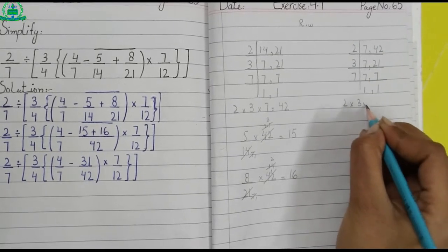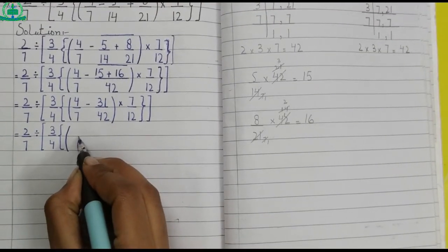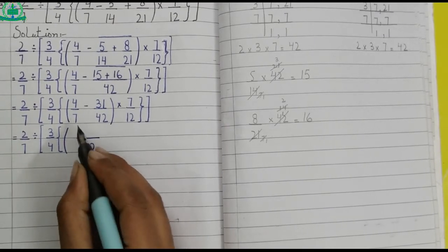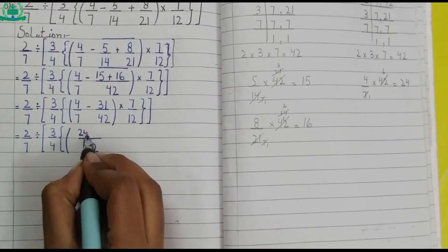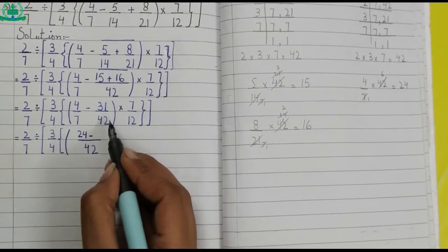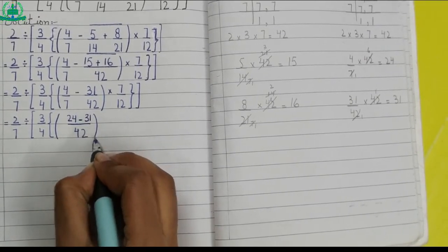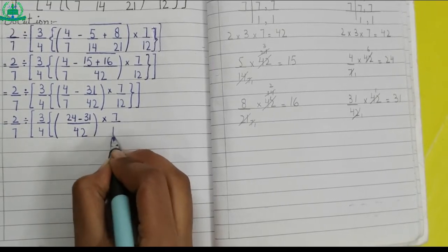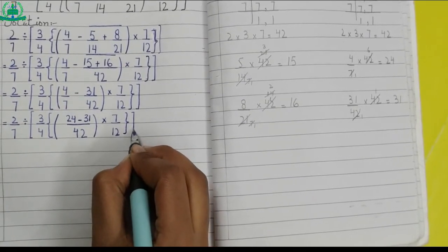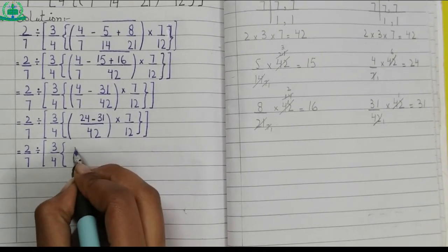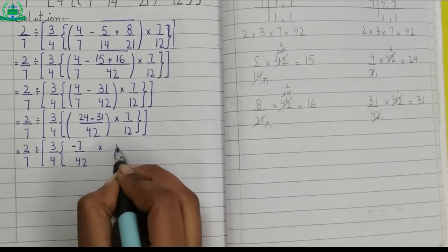Multiply by three, multiply by seven makes 42, so we write 42 in the denominator. We take the first fraction and multiply it with the answer of LCM: 24 minus — for the second fraction we multiply it with the answer of LCM: 24 minus 31. Minus 7, so we write minus 7 upon 42 multiply 7 upon 12.